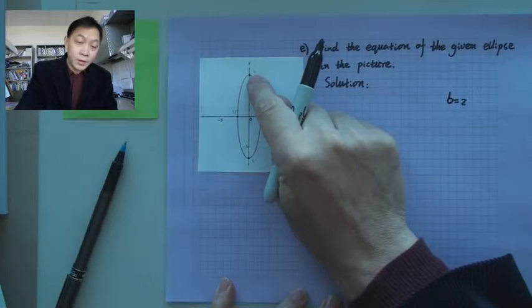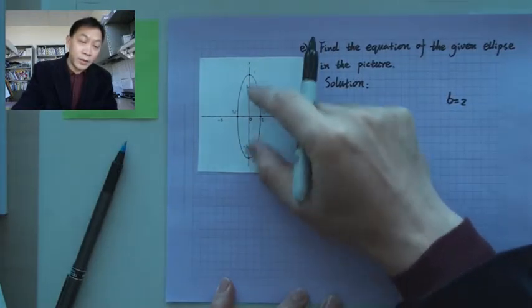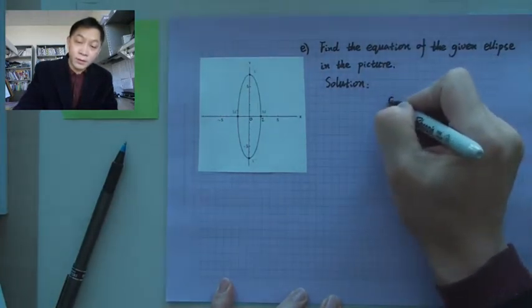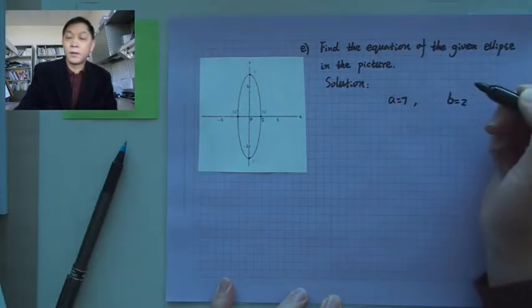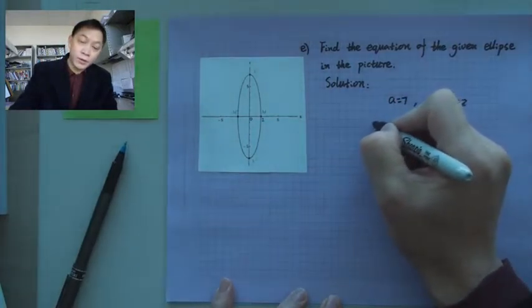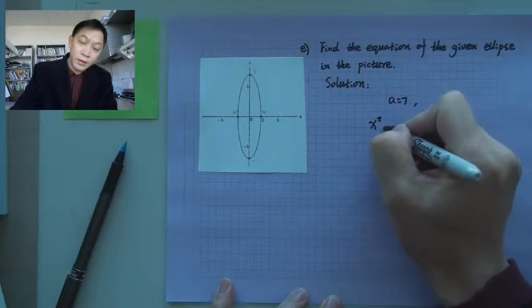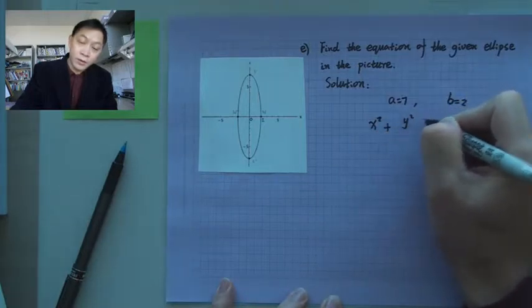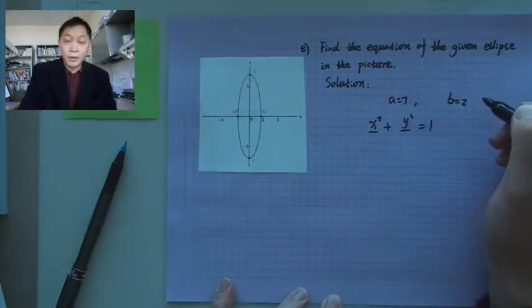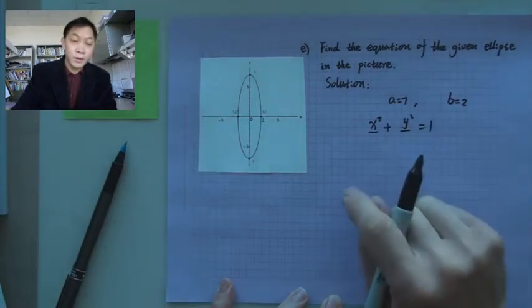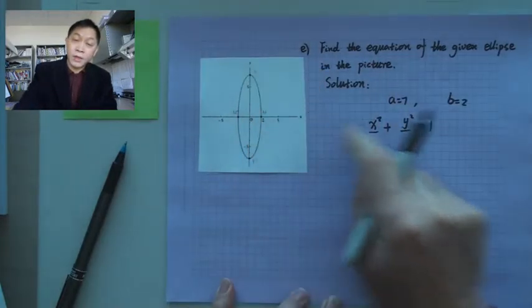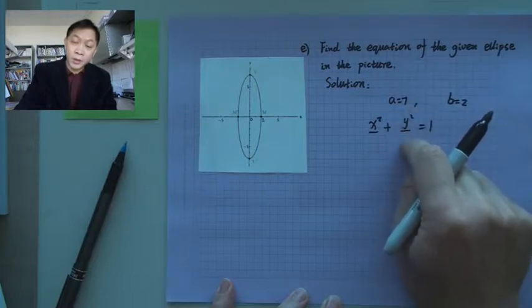Up to here there are 2 vertices, V and V prime. So a is given — a is 7. We have a and b, and we can write down the equation. We have x squared plus y squared equals 1. We need to figure out where to put a. In this case, y is the major axis.